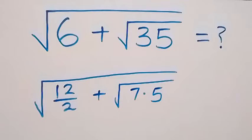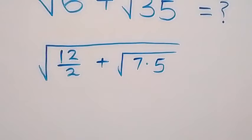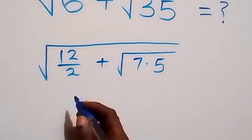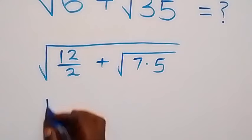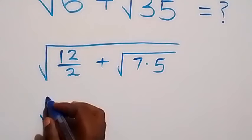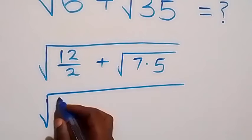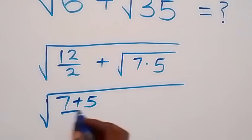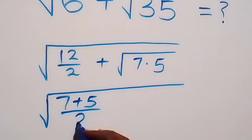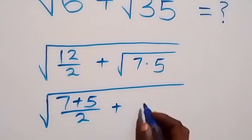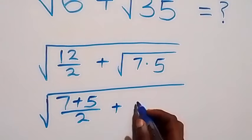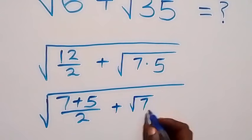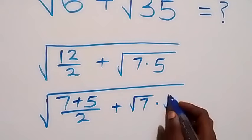In the next step, we can write 12 here as 7 plus 5. Then we have square root of 7 plus 5, all over 2, then plus here we separate this square root as root 7 times root 5.